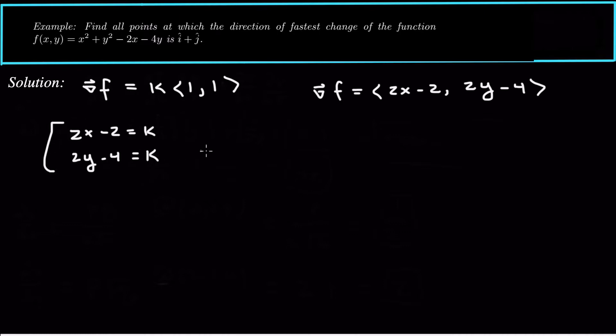Then we get two equations but three unknowns. So let's eliminate one of the variables. Let's eliminate the k variable by equating these two. So then we can say 2x minus 2 is equal to 2y minus 4. Divide everything by 2 and we can say that x minus 1 is equal to y minus 2. Now just solve for y and we could say y is equal to x plus 1.